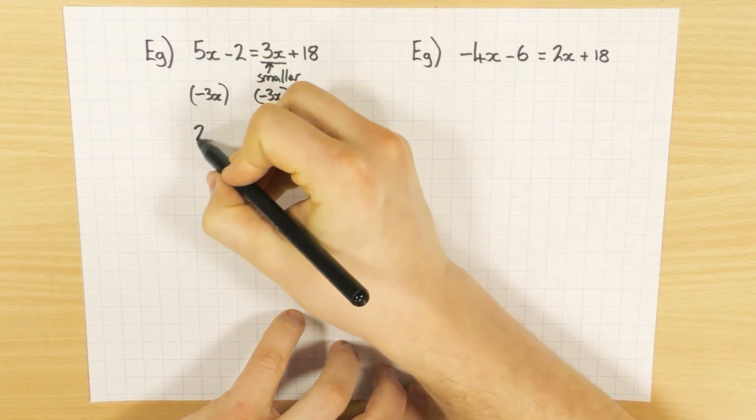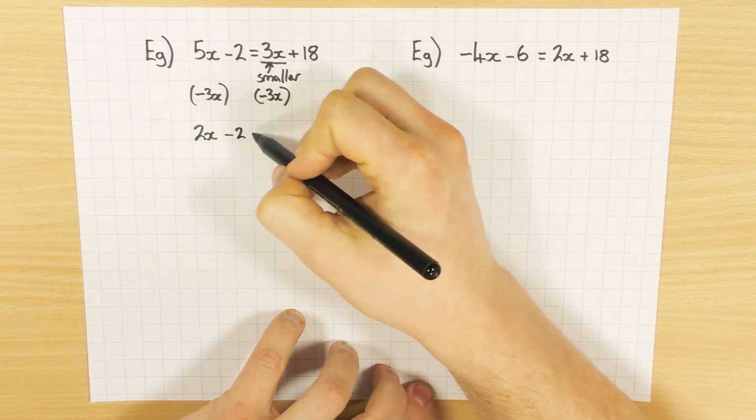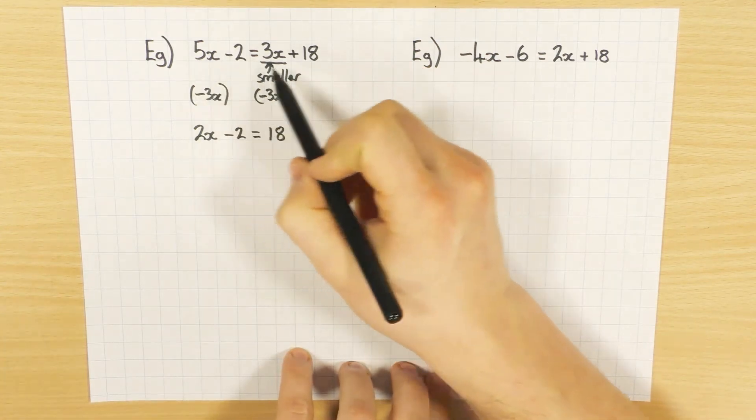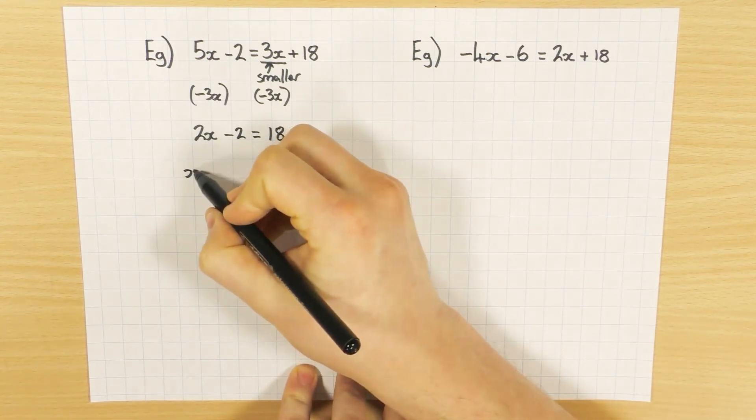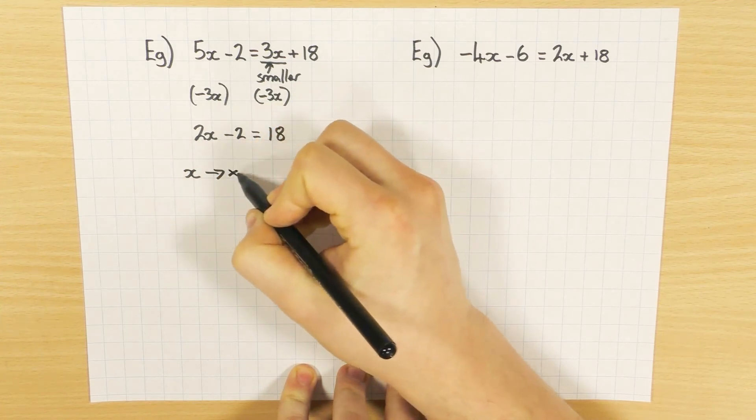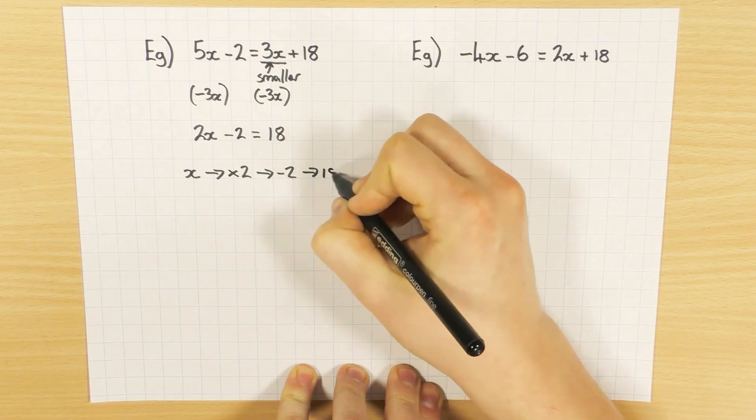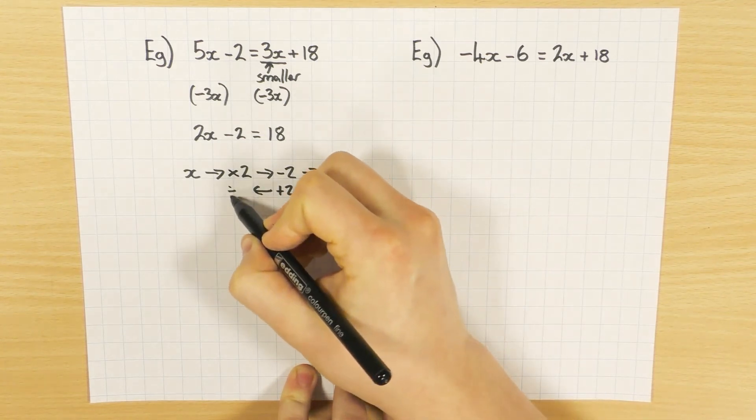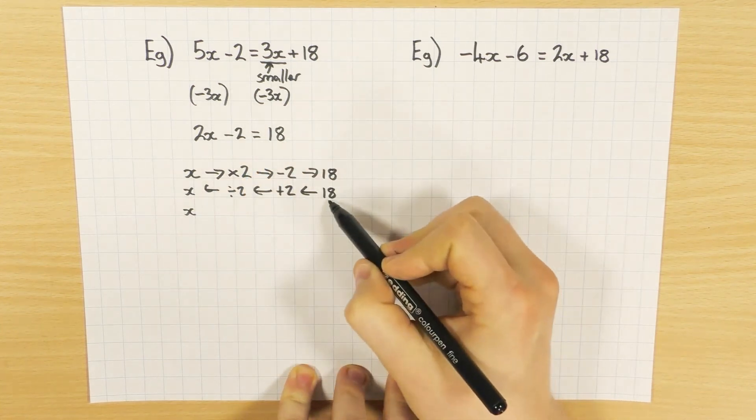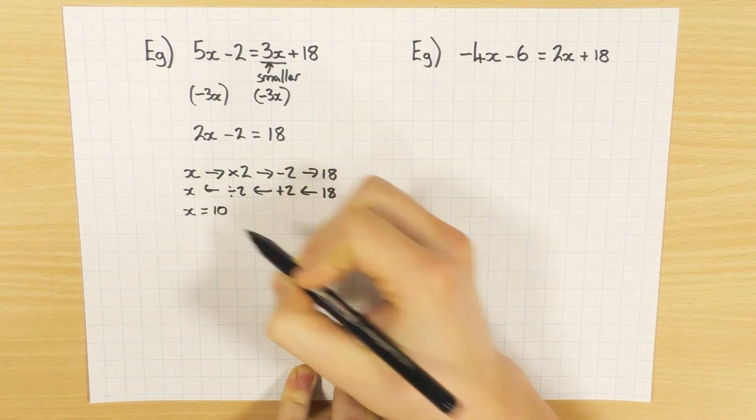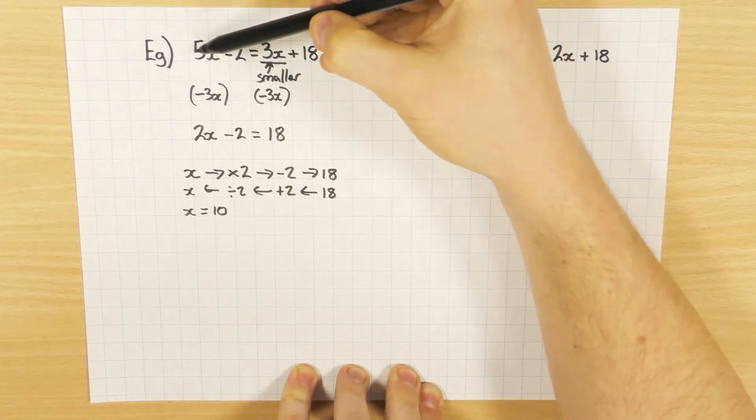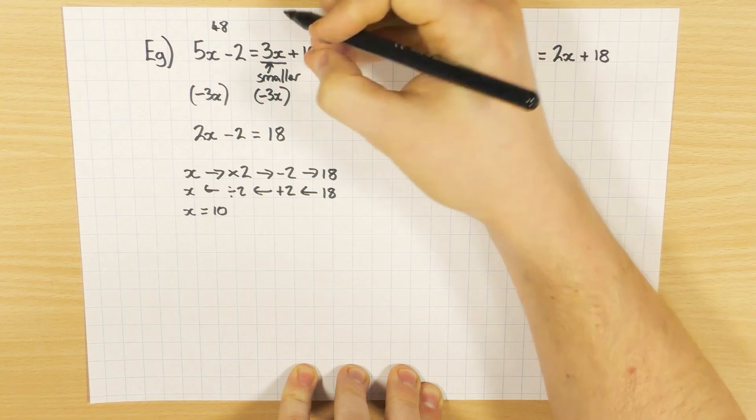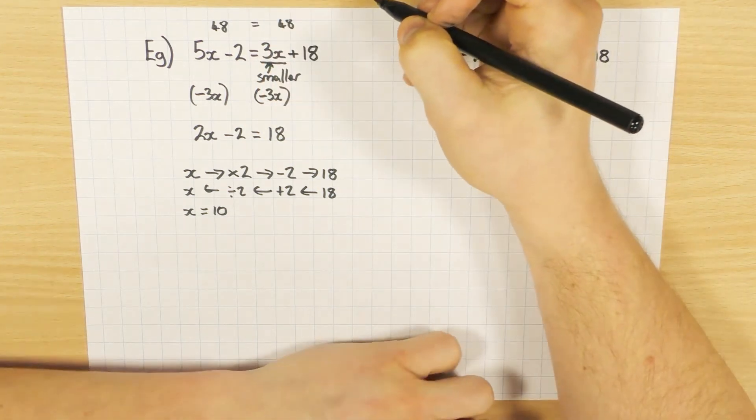So 5x take away 3x leaves me with 2x. I've still got that minus 2. On the right-hand side, 3x take away 3x is nothing, and I'm left with 18. So once you've dealt with the problem of having x's on both sides, you can then go into your flowchart. This is just like our first example. So I do my times 2 first, then I take away 2, and then I get 18. I go backwards, 18 plus 2, opposite, opposite of times 2, divide 2, and I get back to my value x. So 18 plus 2 is 20, divided by 2 is 10. And again, you can test to see if that's right. 5 times 10 is 50, take away 2 is 48, so that would be 48. 3 times 10 is 30, plus 18 is 48, and of course 48 equals 48. So you can always test to see if it's correct.